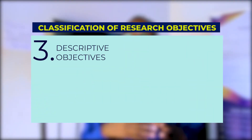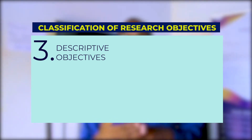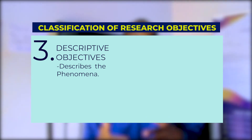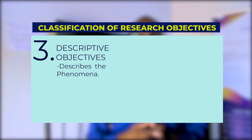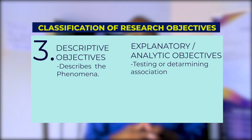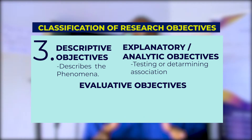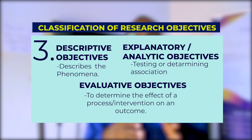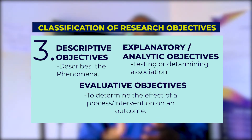A third classification is based on the action verbs and nouns used. Descriptive objectives are used to describe a phenomenon — for example, 'to describe the prevalence or incidence of a disease.' Explanatory or analytic objectives test or determine associations — for example, 'to determine the association between salary and performance.' Evaluative objectives determine the impact or effect of an intervention on an outcome — for example, 'to evaluate the effect of salary on performance.'